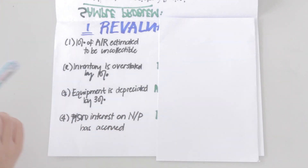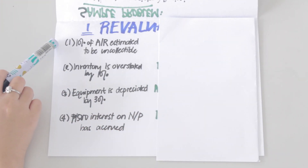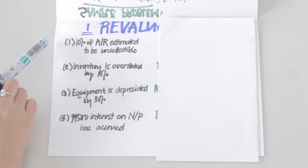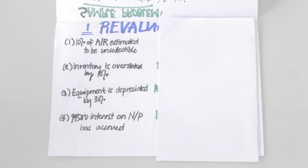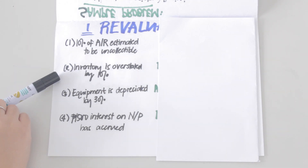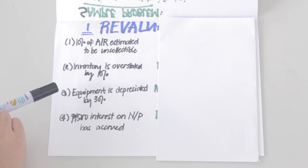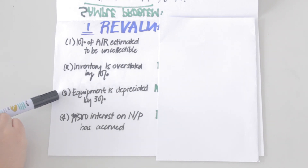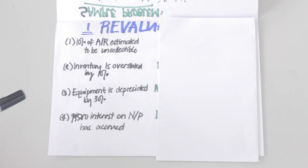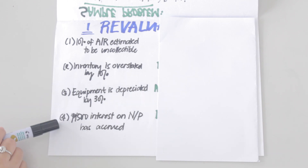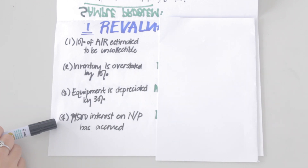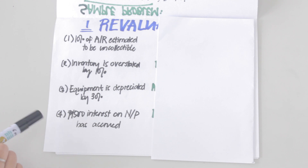Additional information provided: 10% of the accounts receivable is estimated to be uncollectible; inventory is overstated by 10%; equipment is to be depreciated only by 30%; and 1,500 pesos of interest on notes payable has already accrued but has not been recorded.